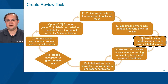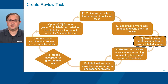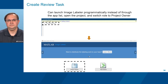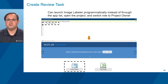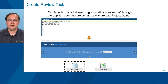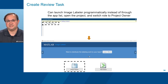Once a label task owner has sent out images for review, the project owner observes this event and creates a review task for a review task owner to evaluate the labeled ROIs for accuracy. In this instance, it is possible to invoke Image Labeler from the command line, open the project, and choose a role. After selecting their profile, the project owner's Image Labeler environment opens in the state in which they had previously left it.